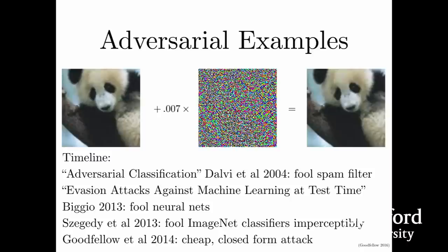If we compute exactly how we could modify the image to cause the convolutional network to make a mistake, we find that the optimal direction to move all the pixels is given by this image in the middle. To a human it looks a lot like noise, but it's not actually noise—it's carefully computed as a function of the parameters of the network. If we multiply that structured attack image by a very small coefficient and add it to the original panda, we get an image that a human can't tell from the original.